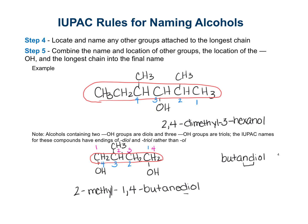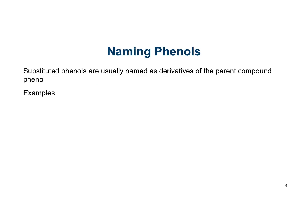That's how we write it out using di or tri rather than just OL. Now let's look at naming phenols. When we talk about naming substituted phenols, they are usually named as derivatives of the parent compound - we looked at this at the end of the last chapter.